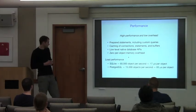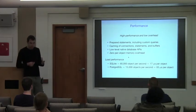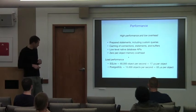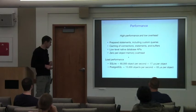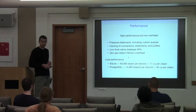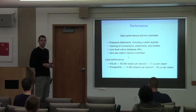Here are some indicative performance numbers for loading an object with about half a dozen members — strings and integers. SQLite being an in-process database is really fast. That benchmark was run on a Xeon — two generations old Xeon — a pretty beefy machine.